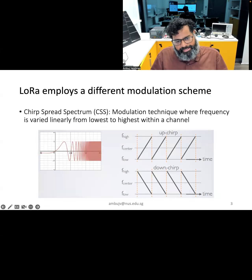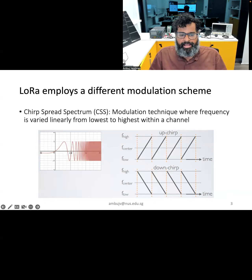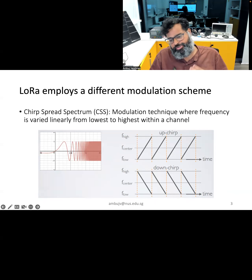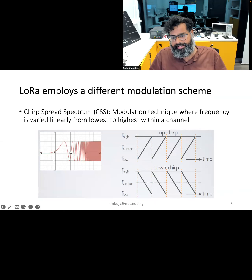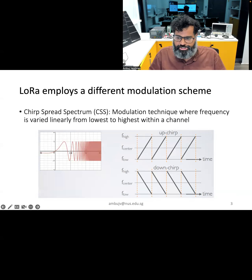Looking at this modulation scheme in a nutshell, the individual symbols comprise up-chirps and down-chirps, similar to what is shown on the slide. A chirp has a frequency that either increases or decreases with time. If the frequency increases, it is called an up-chirp, and if it decreases with time, it is called a down-chirp.